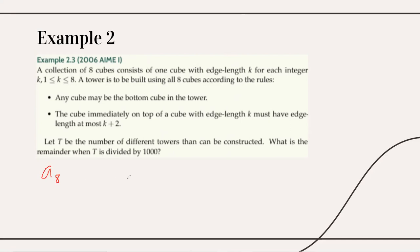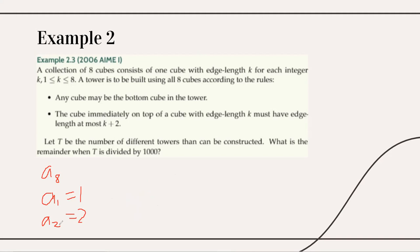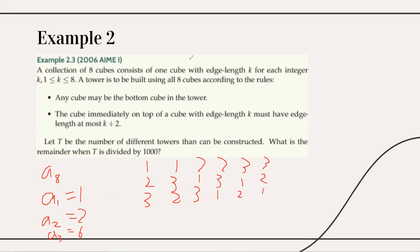Let's compute a few values. a(1) = 1, since there's only one way to place one block. a(2) = 2: we can have order 1,2 or 2,1 — both valid. a(3) = 6, because all 3! = 6 permutations are valid. For example: 1,2,3 / 1,3,2 / 2,1,3 / 2,3,1 / 3,1,2 / 3,2,1 — you can check these all satisfy the condition.